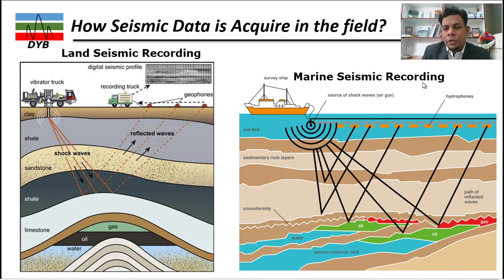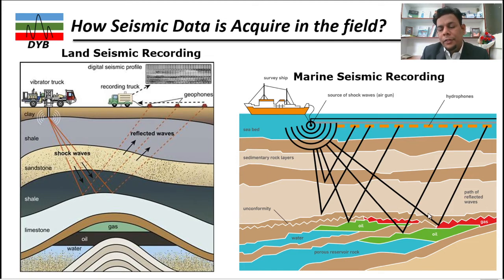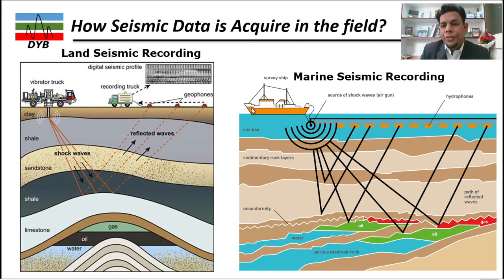In the marine case, you have a different energy source — the air gun — which produces pressure waves that travel through the water column to the seabed and into the subsurface where they reflect. The same principle of velocity and density contrast applies. The reflected waves come back to a receiver called the hydrophone, which is used in the marine case, while in the land case we use a geophone. The hydrophone is connected by a cable and the data is recorded on the vessel.